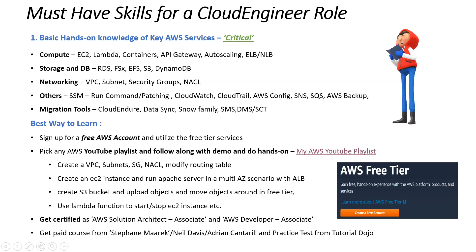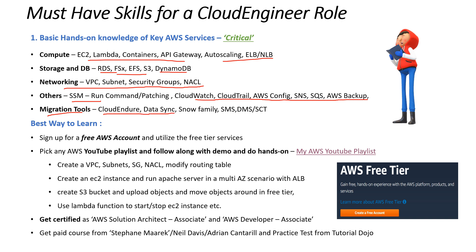How can the Cloud Engineer acquire that knowledge? You need basic hands-on knowledge of all key AWS services — this is critical. On the compute side: EC2, Lambda, containers, auto scaling, ELB. For storage: RDS, DynamoDB, and how to mount FSx and EFS on an EC2 instance. From the networking side: VPC, subnets, security groups, NACLs. You should also know SSM, CloudTrail, and CloudWatch. If you are doing migration, additionally learn CloudEndure, DataSync, SnowFamily, DMS, and SMS.